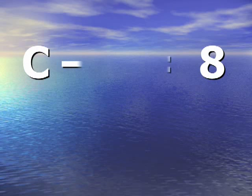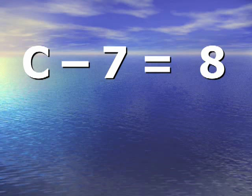Our third example: c minus 7 is equal to 8. Well, now what we're doing to the variable c is we are subtracting 7 from it. The opposite of subtracting 7 is adding 7. So we add 7 to the left and right side of the equal sign.